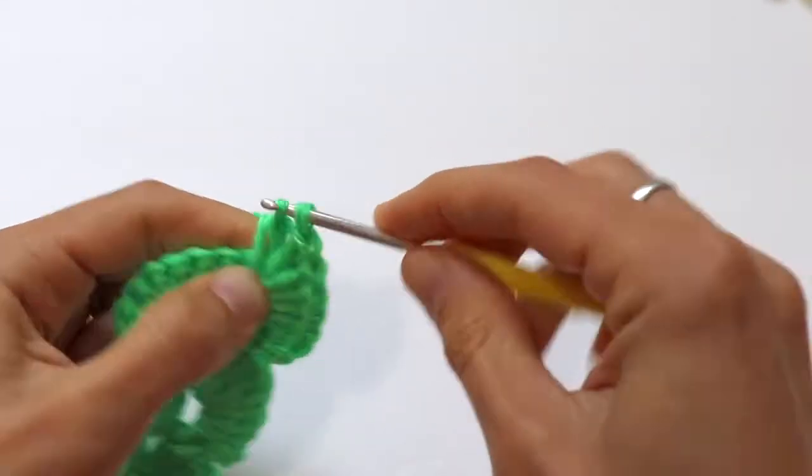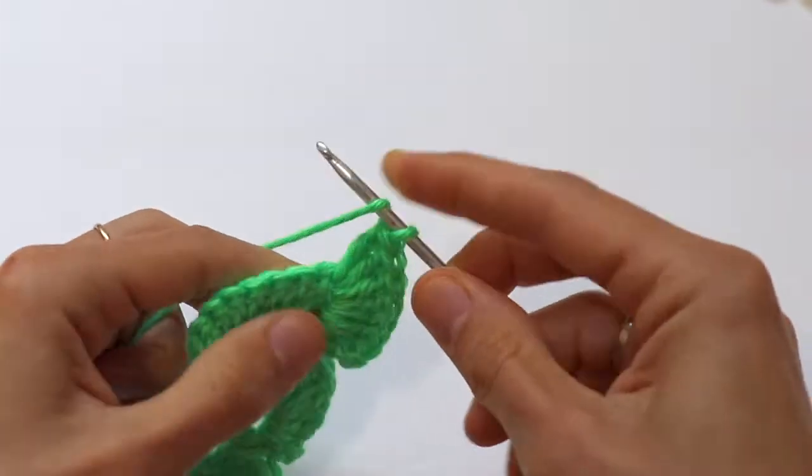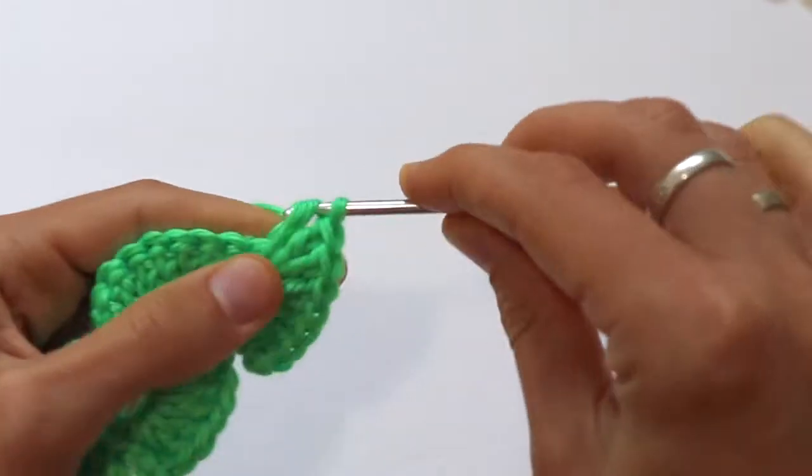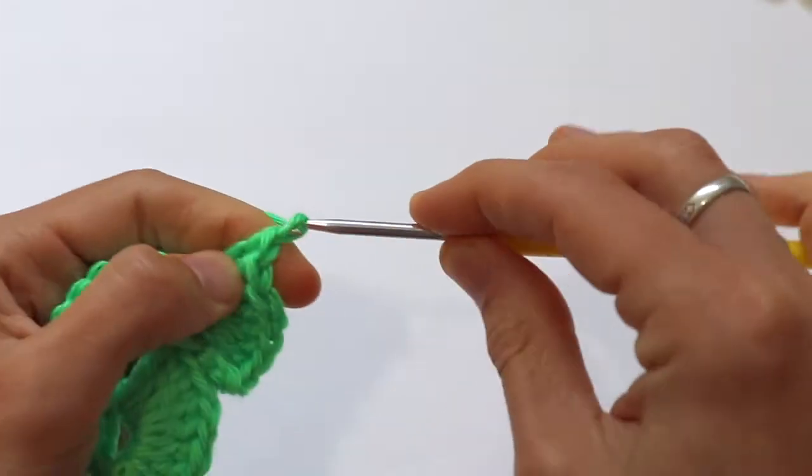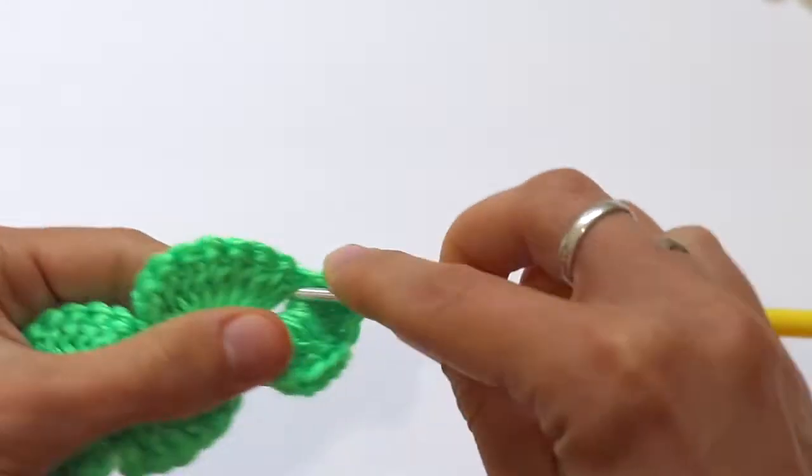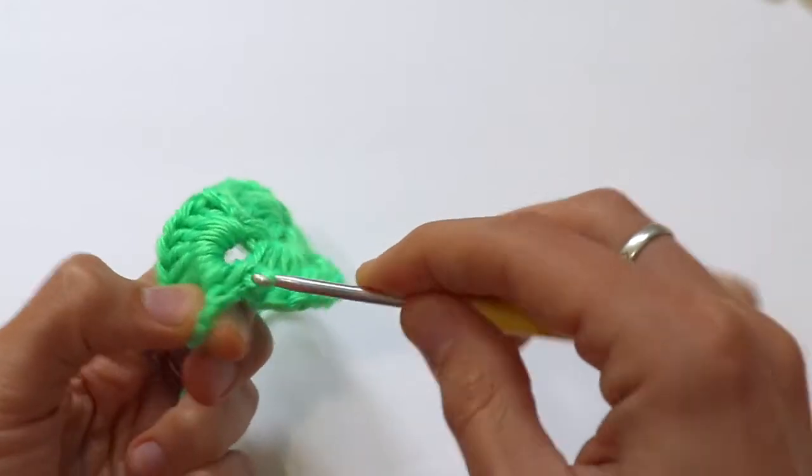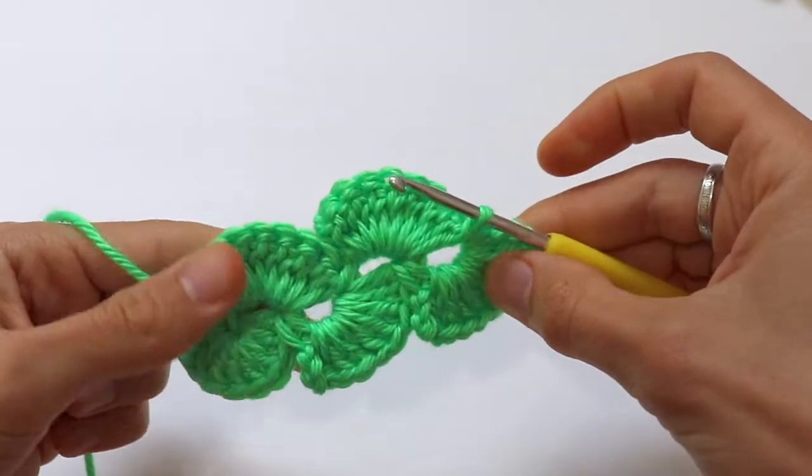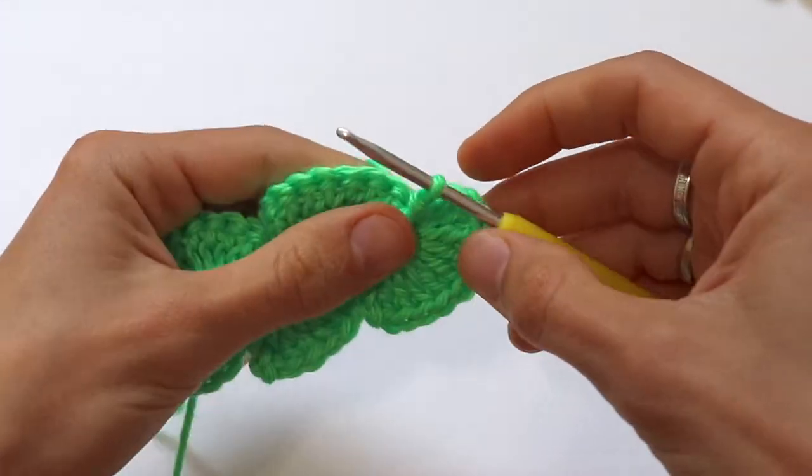It could also be used if you're crocheting a summer top. It can be used as stripes for the top, like this.